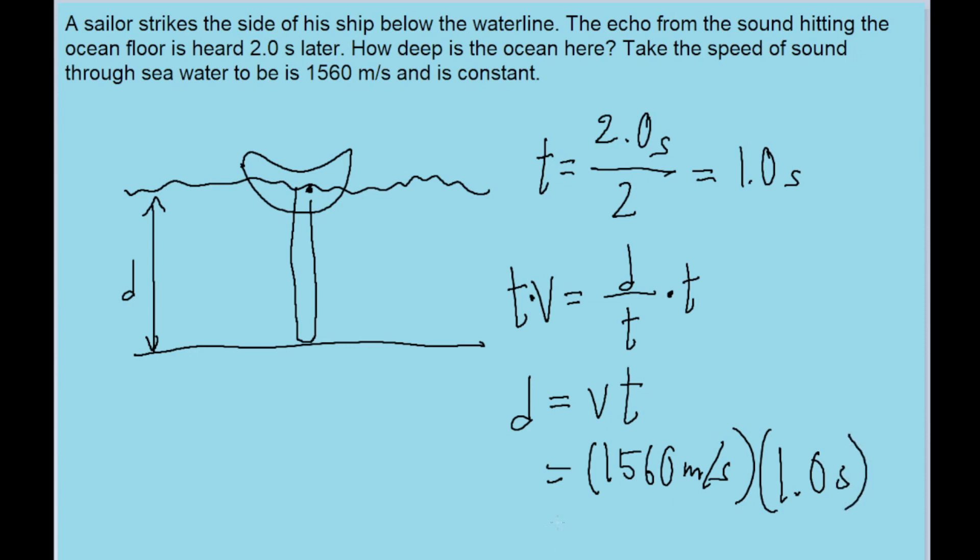We don't really need to put this into our calculator since we're just multiplying it by one, and that tells us that the distance d is about 1560 meters. That was a very sloppy m. 1560 meters, and that is what we can estimate as the depth of the ocean at this point in the sea.